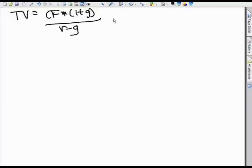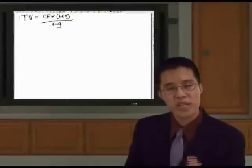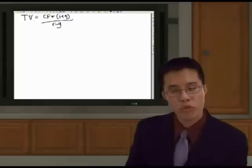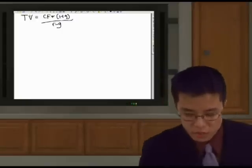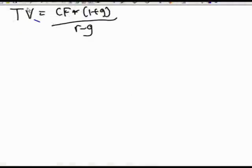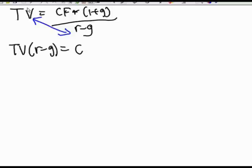Here's our basic formula: Terminal Value equals cash flow times (1 plus G) divided by (R minus G). We're going to solve and isolate the G term. That's how we're going to solve for this perpetual growth rate number. The first thing we're going to do is cross multiply, so we end up with TV times (R minus G) equals cash flow times (1 plus G).